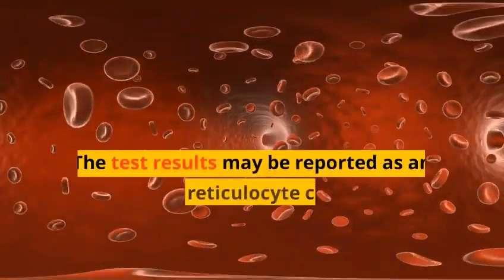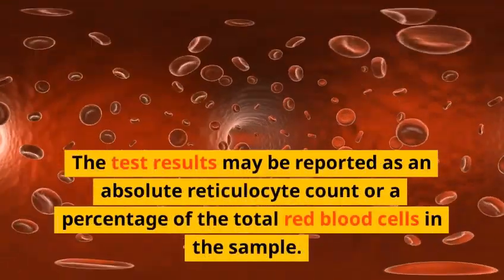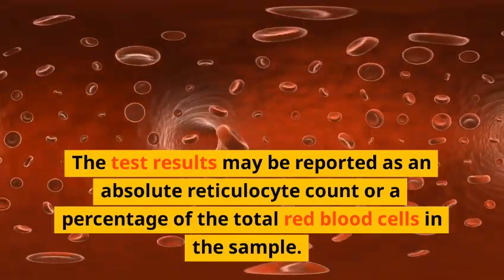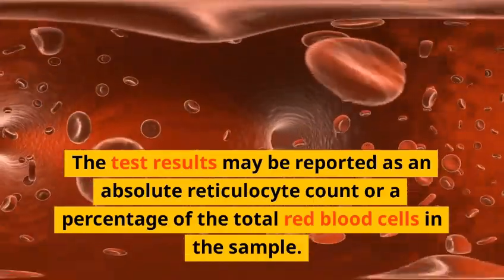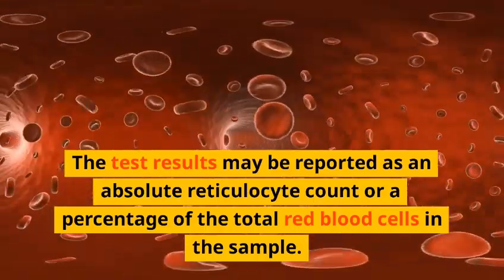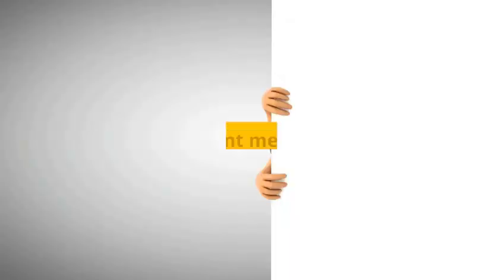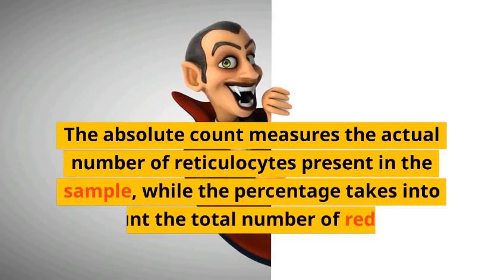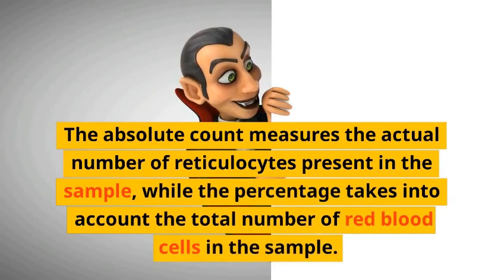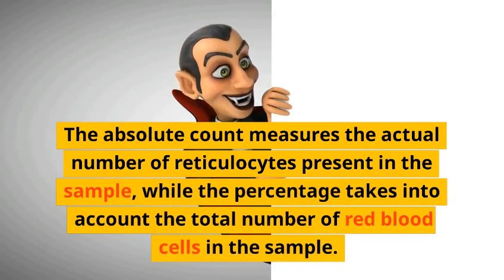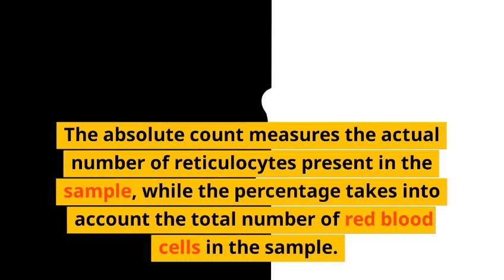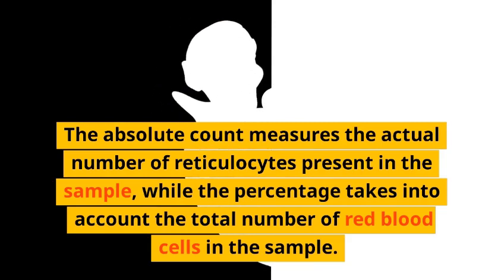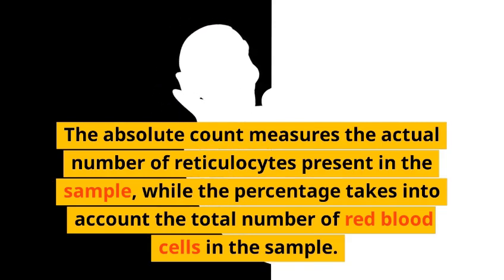The test results may be reported as an absolute reticulocyte count or a percentage of the total red blood cells in the sample. The absolute count measures the actual number of reticulocytes present in the sample, while the percentage takes into account the total number of red blood cells in the sample.